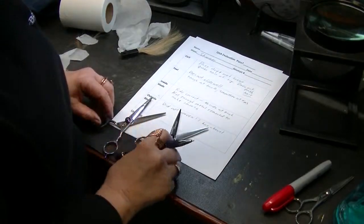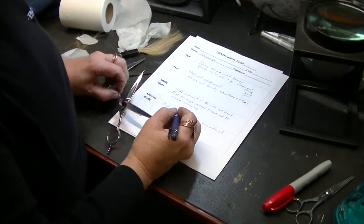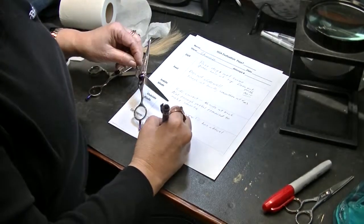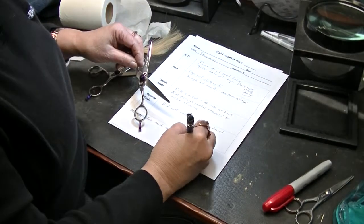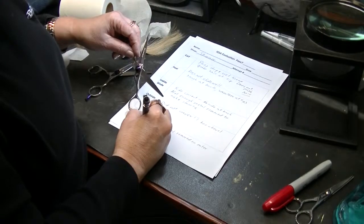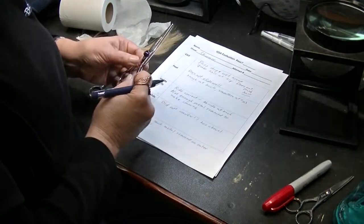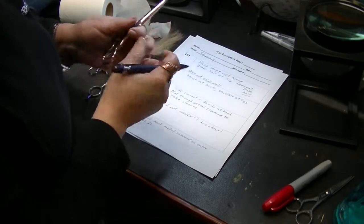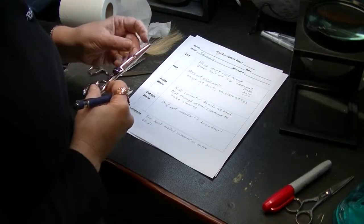A lot of times when you get shears, they're going to have a bevel on them. And what I was wanting to see here is how you would re-convex that edge. And these shears are left as a beveled edge. I wanted a convex edge. That's what I was looking for.